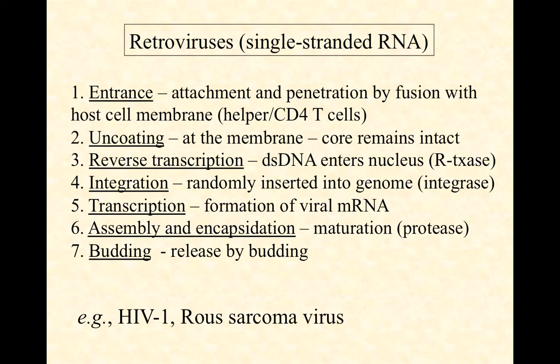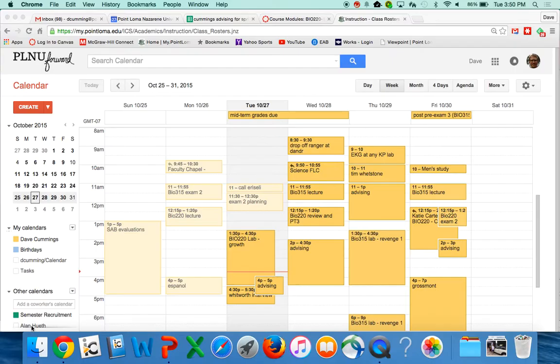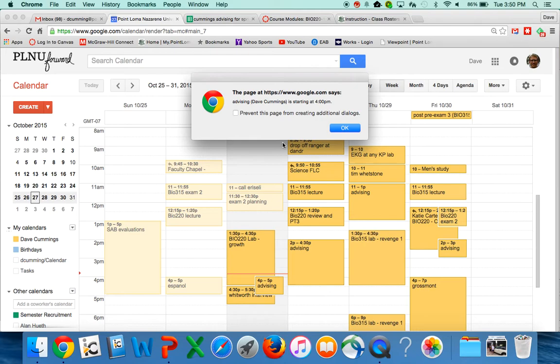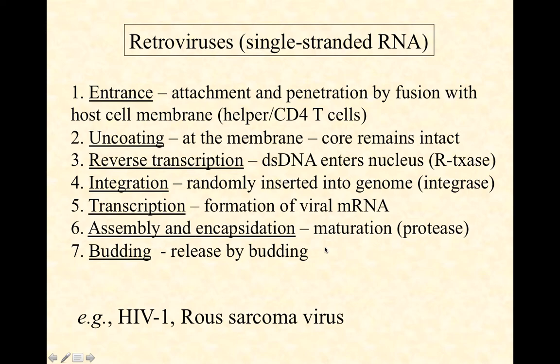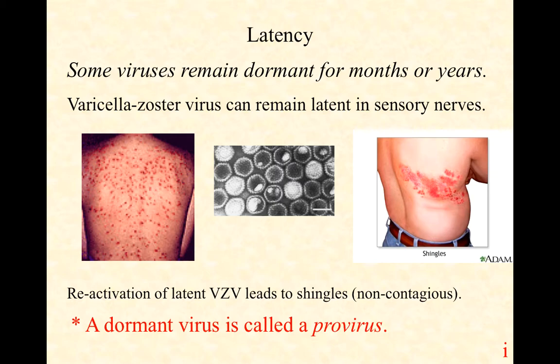HIV-1 is a well-known example, but Rous sarcoma virus is arguably the first retrovirus ever discovered and studied. It causes cancer — particularly in rats — making it safe for humans to work with, and it has become something of the E. coli of retrovirus research. As a cancer-causing virus, it is classified not only as a retrovirus but also as an oncovirus.